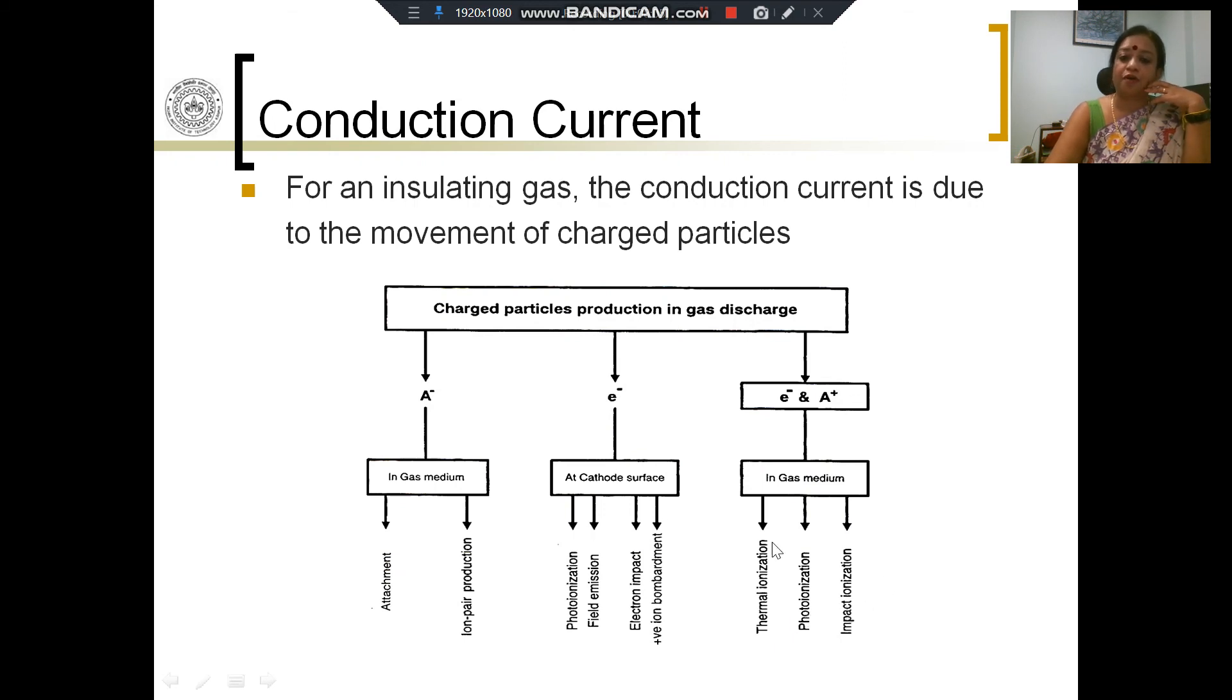Apart from positive ions, we might also have negative ions produced in the gas through attachment or ion pair production. These are the various kinds of charged particles which might be produced in an insulating material and may contribute to the conduction currents. Next we shall see what are these processes that we are talking about.